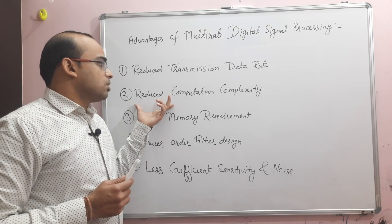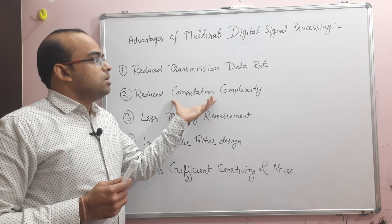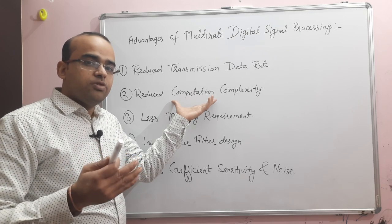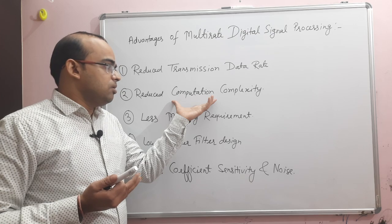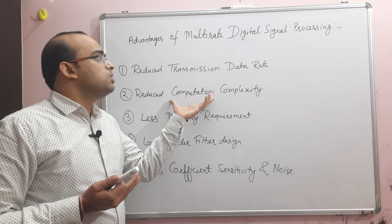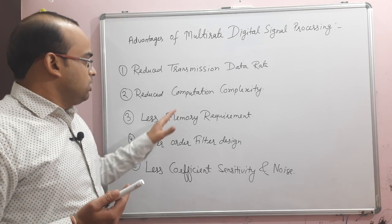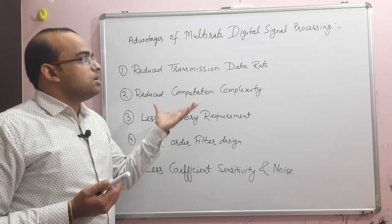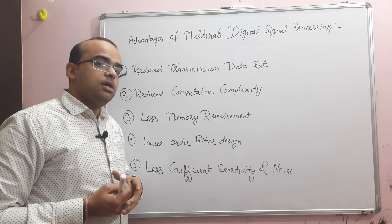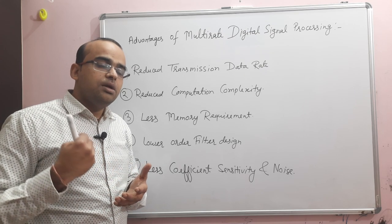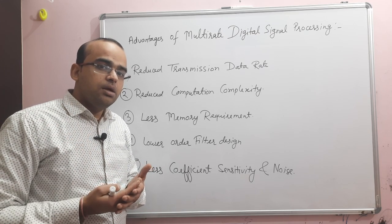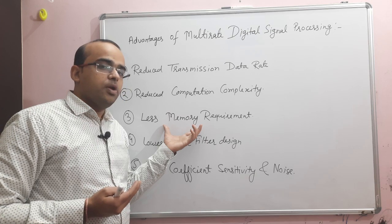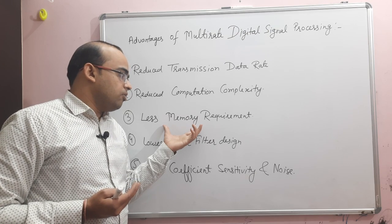The second advantage is we can reduce computation complexity. In A-to-D and D-to-A conversion a lot of processing takes place and system complexity increases, but by using multi-rate digital signal processing we can reduce computation complexity. The third advantage is less memory requirement — by doing appropriate sampling and quantization, we can reduce the memory requirement and less storage will be required.